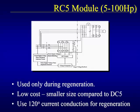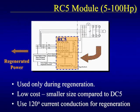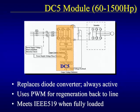Line regeneration modules come in two forms. The first is the RC5, which is connected to both the input power lines and the DC bus of the drive. During normal operation, input power is routed around the RC5 and through the drive's normal converter section. However, as regeneration occurs, the additional power on the DC bus is routed through the RC5 and back onto the power lines. Because the RC5 is not a complete replacement of the drive's converter section, it is a smaller package than the DC5. The DC5 is a complete replacement of the drive's standard converter section — both input and regenerated power are routed through the DC5. The DC5 module is larger than the RC5, but it is capable of handling much larger drive sizes.